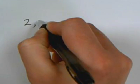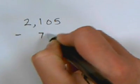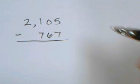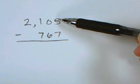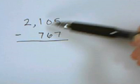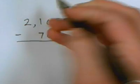Let's look at another problem. In this problem, 2,105 minus 767. I also cannot take 7 from 5, so I go next door to borrow but he doesn't have any, so I underline.